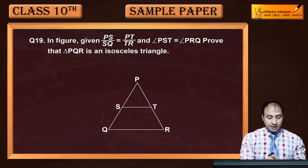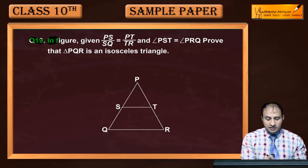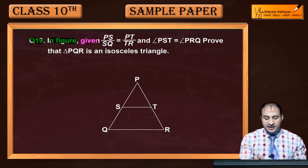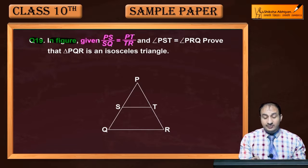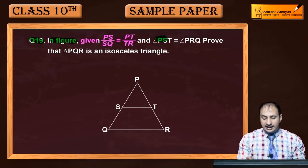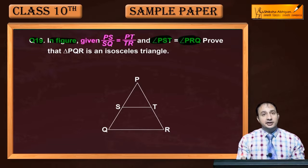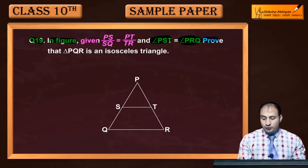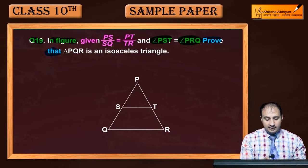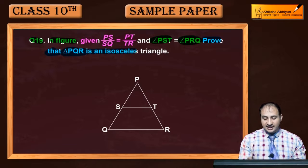Now see question 19. In figure given PS by SQ is equal to PT by TR and angle PST is equal to PRQ. Then prove that triangle PQR is an isosceles triangle.